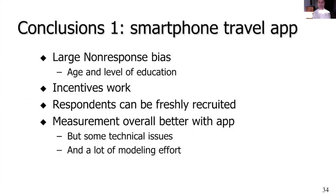Conclusions from this first study: there is large non-response bias in sensor-based work. We can freshly recruit respondents and measurement was overall much better with the app than with the web diary. There were some technical issues, and it took a lot of effort to produce the travel statistics tables — people working for months identifying which trips were valid, running classification models, and producing statistics. Of course we don't have to do all of this work again, but it was still a lot of work to set everything up.